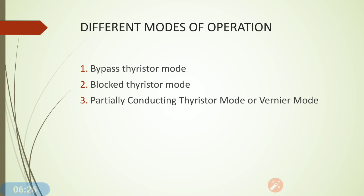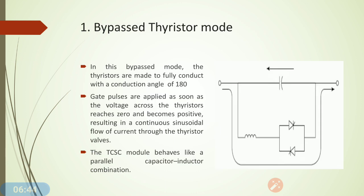There are three modes of operation of TCSC. The first is bypass thyristor mode, the second is locked thyristor mode, and the third is partially conducting thyristor mode, also called the vernier mode. In the bypass mode, the thyristors are made to fully conduct with a conduction angle of 180 degrees. The gate pulses are applied at 0 degrees of voltage, so when the voltage starts at 0 degrees the thyristors are conducting, resulting in continuous sinusoidal flow of current through the thyristor valve.